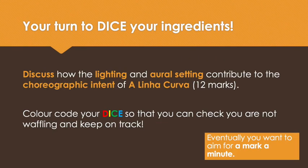Now that I have introduced how to write a 12 mark question, it's your turn. Your question is: 'Discuss how the lighting and aural setting contribute to the choreographic intent of Alina Cojocaru.' This question is worth 12 marks. Attempt to write this 12 mark question. As you are writing it, or at the end, colour code your DICE — description, interpretation, contribution and evaluation — in four different colours. This will ensure that you are on track and will reduce any waffling.